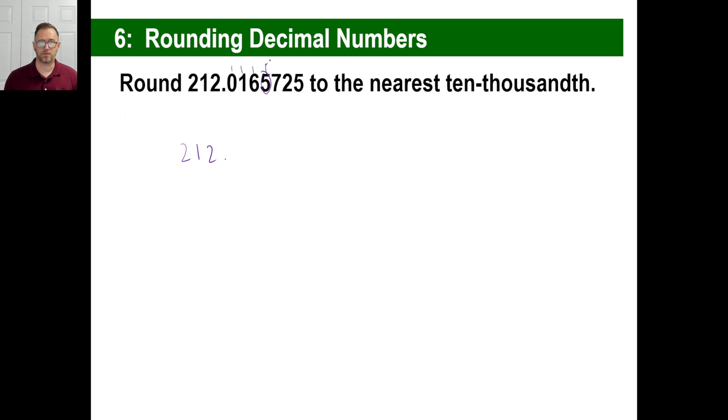So we look to the right. Is this a five or greater? Obviously, seven is greater than five. So we're going to go one, zero, one, six, and then round the five up to six. Now let's read this just for the heck of it. This is 212 and 1,066 ten-thousandths. It won't be 1,066 thousandths. That'd be 0.166 with no zero.